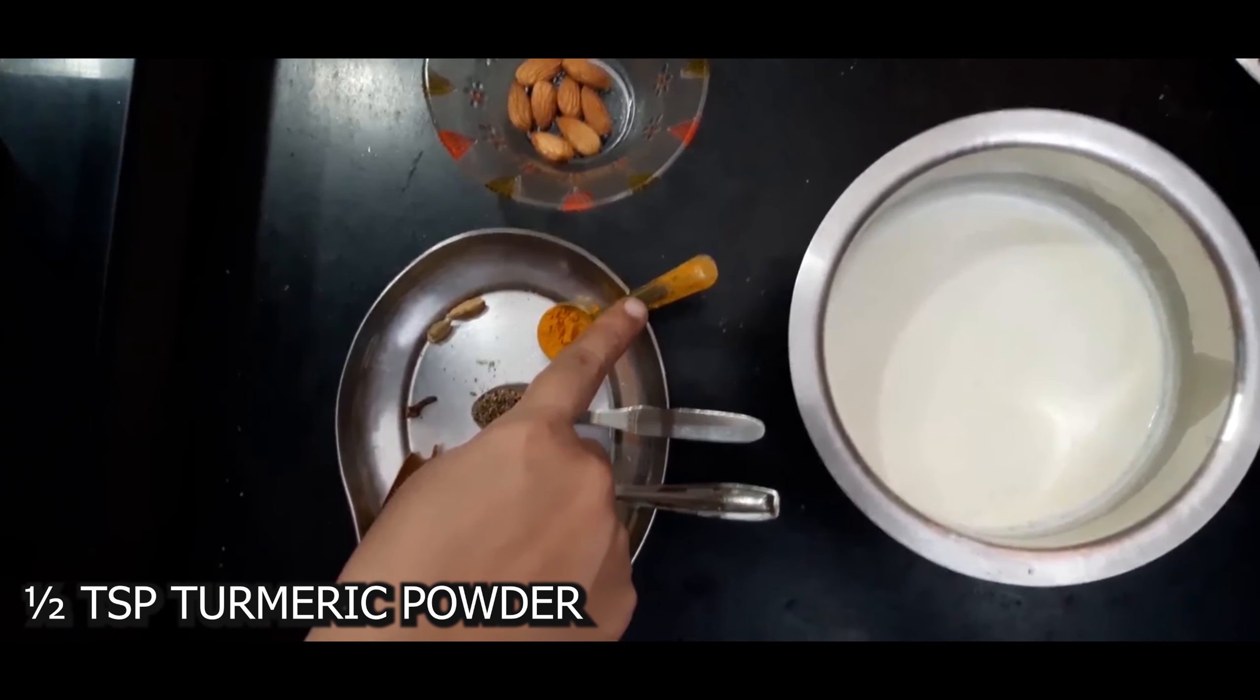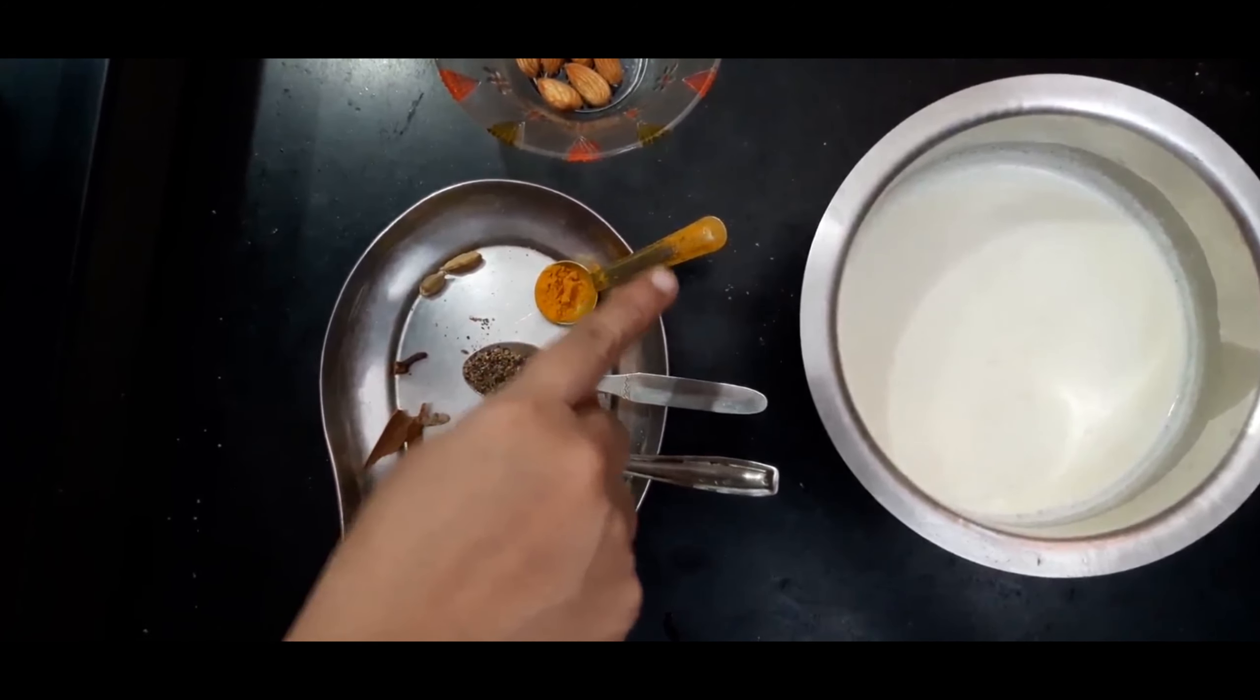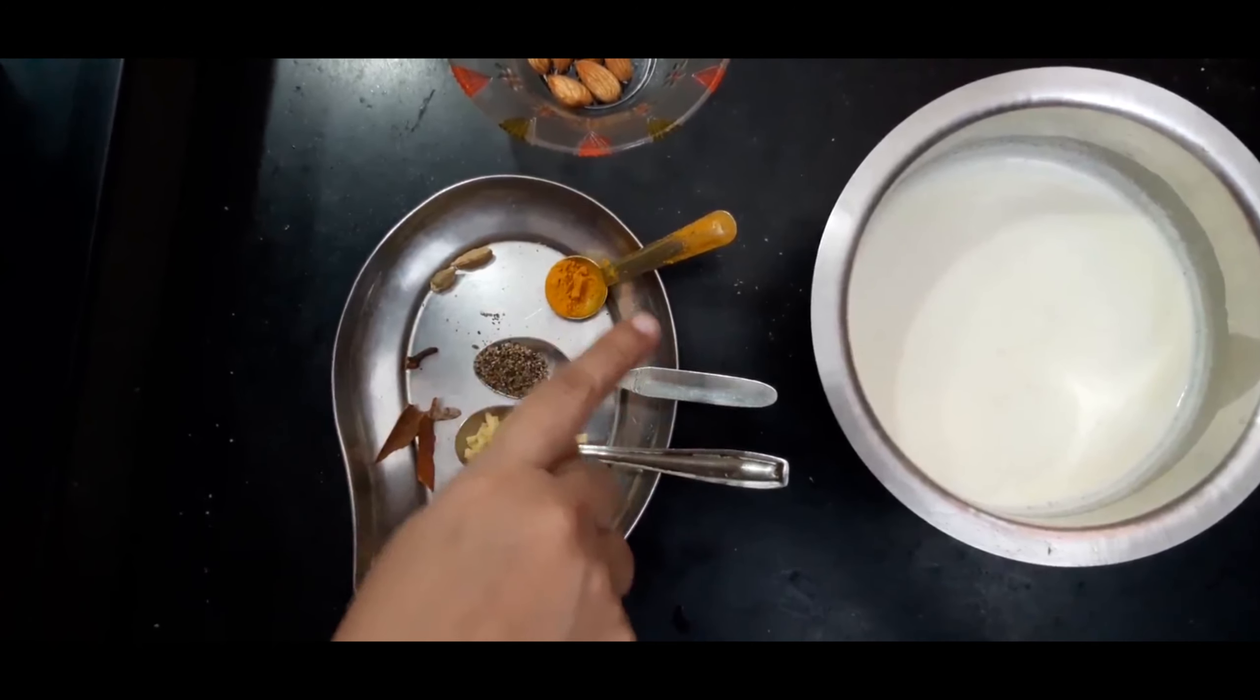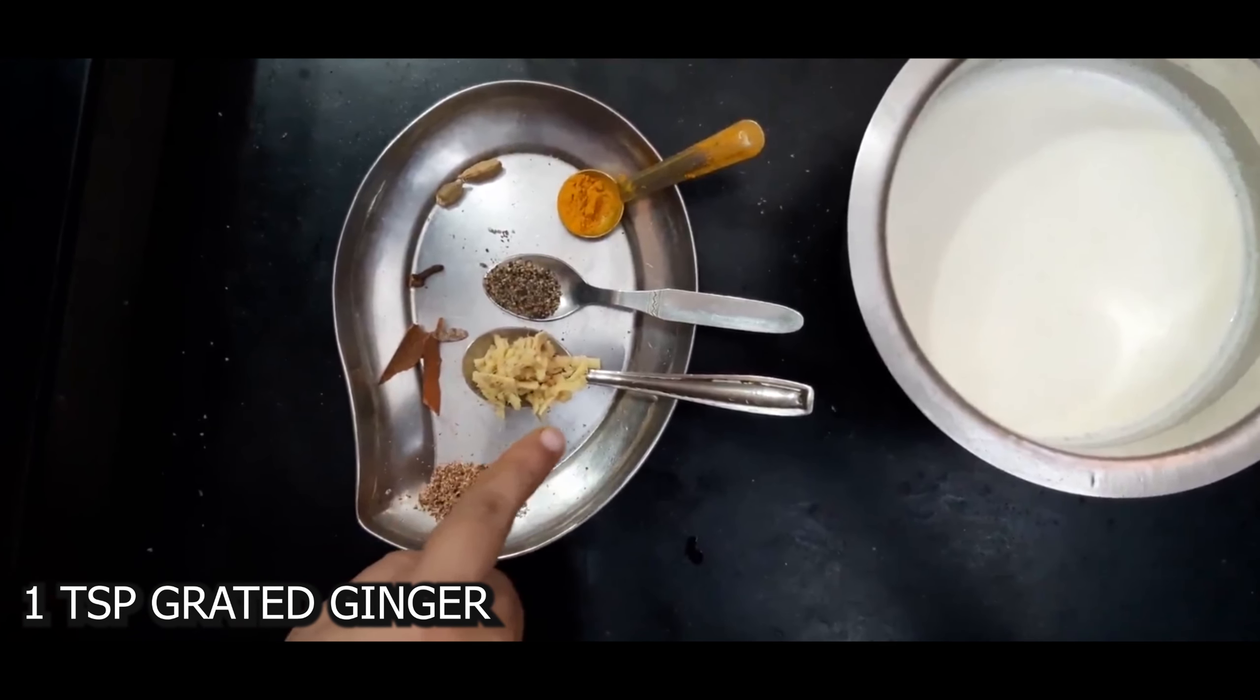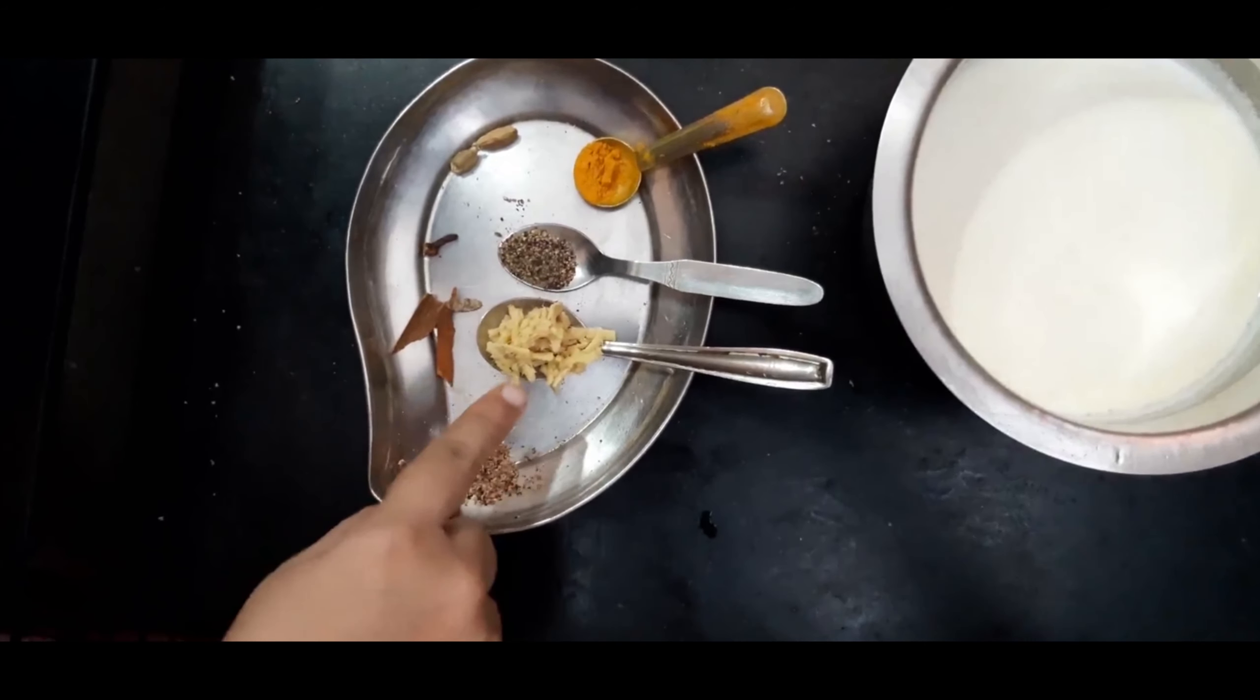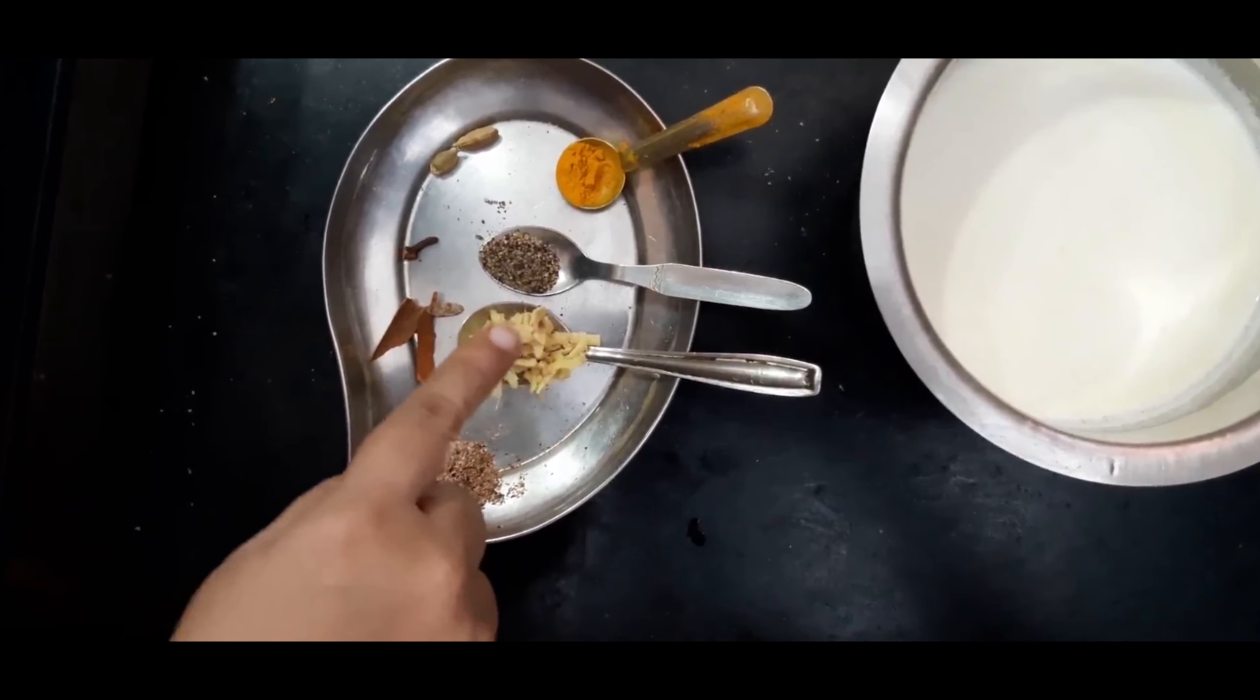Half teaspoon turmeric powder. This is homemade turmeric powder free from chemical adulterants. Half teaspoon pepper powder. One teaspoon grated ginger. This I will add in the last as if you boil ginger in milk it may curdle at times.